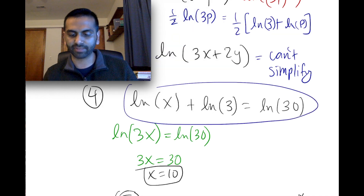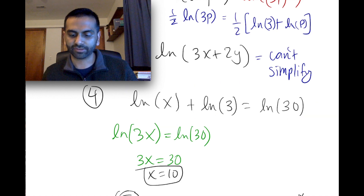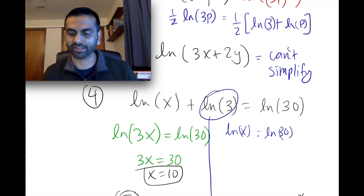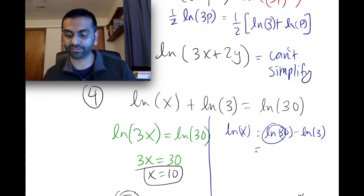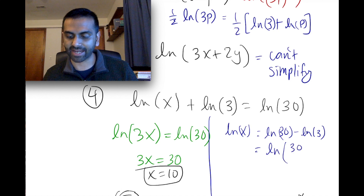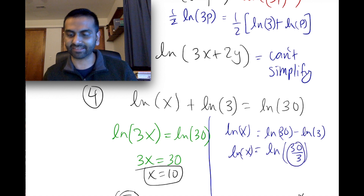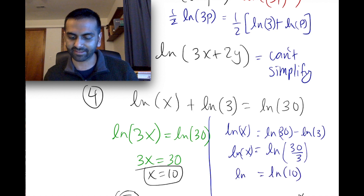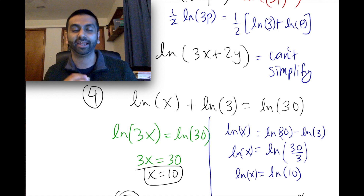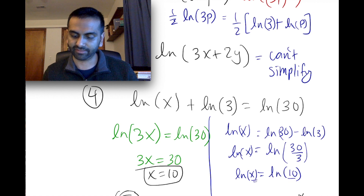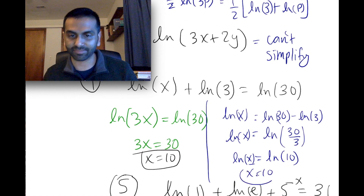The other way: your instinct might be to get x by itself by subtracting ln of 3 from both sides. On the left you're left with just ln of x, and on the right you have ln of 30 minus ln of 3. That's where the second rule comes in — subtracting two logs means ln of the first divided by the second, all inside the log: ln of 30 over 3, which simplifies to ln of 10. So ln of x equals ln of 10, which means x equals 10. Same answer.